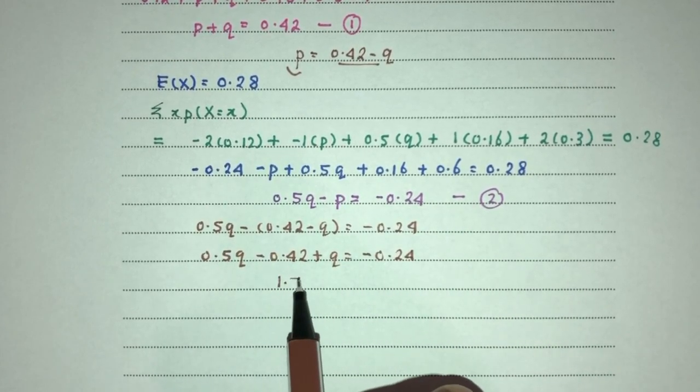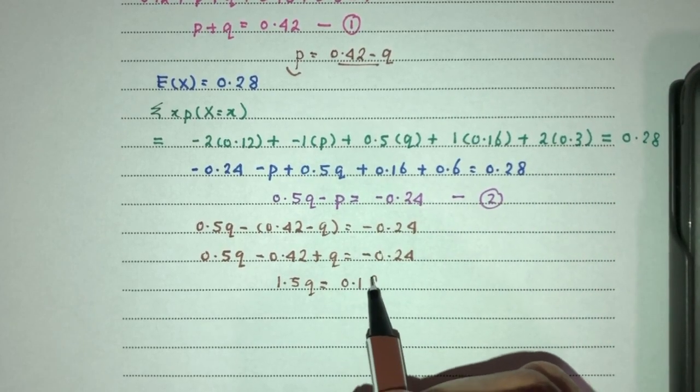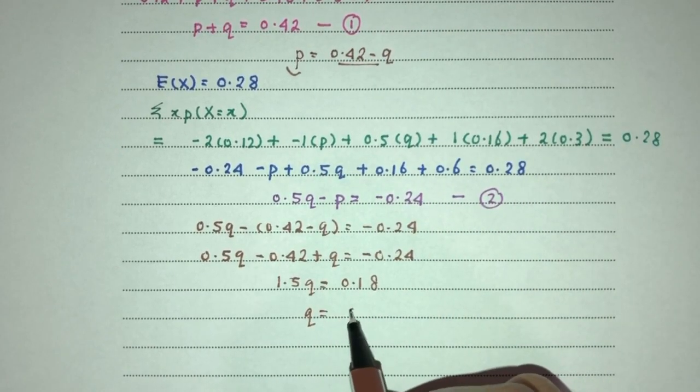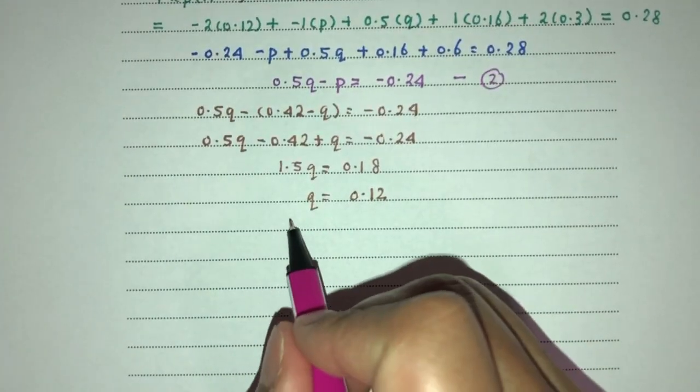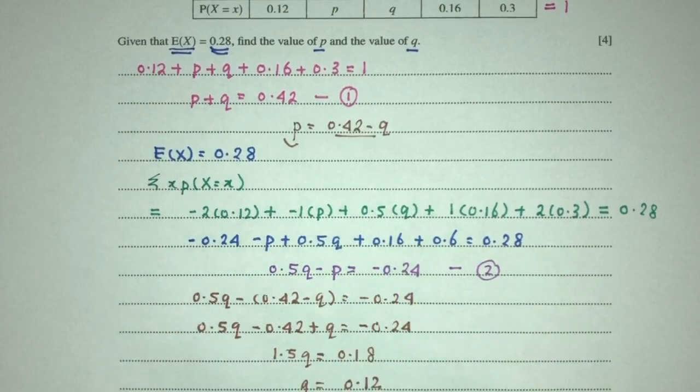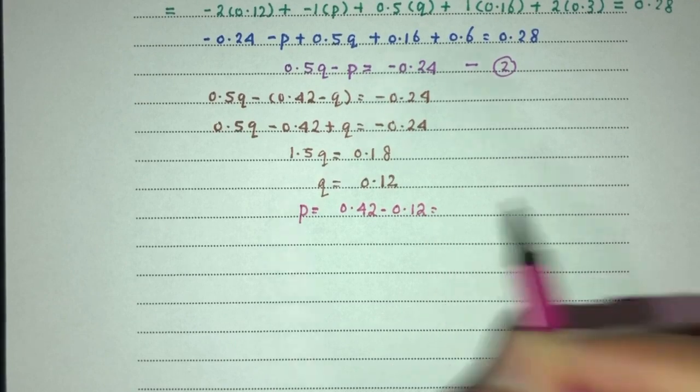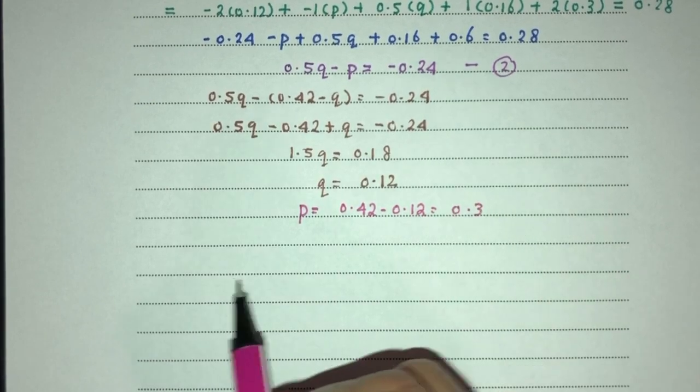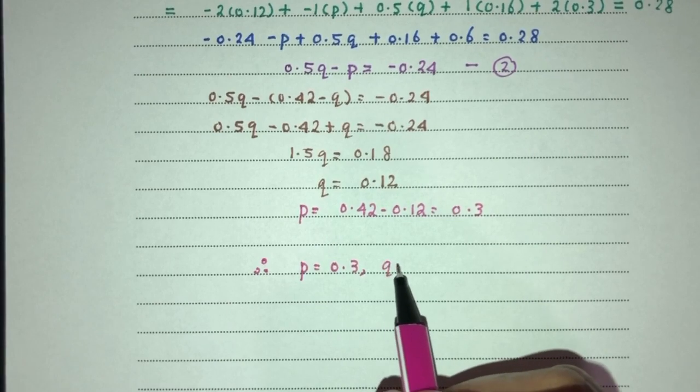Now, it will become 1.5Q is the value of minus 0.24 plus 0.42 that should become 0.18. Therefore, Q is the value of this divided by 1.5 should be 0.12. That's for Q. Now, let's find the value of P. P should be replaced back in here. So, finally, we found the value of P should be 0.3 and Q is 0.12. Here you go.